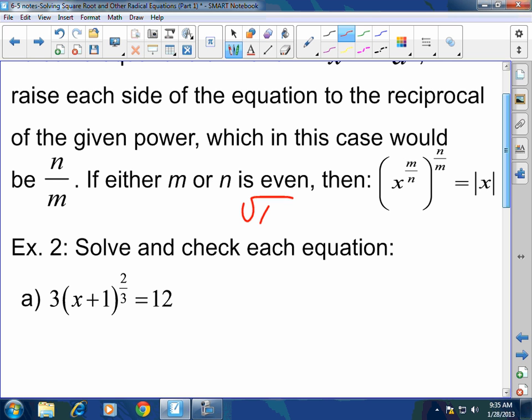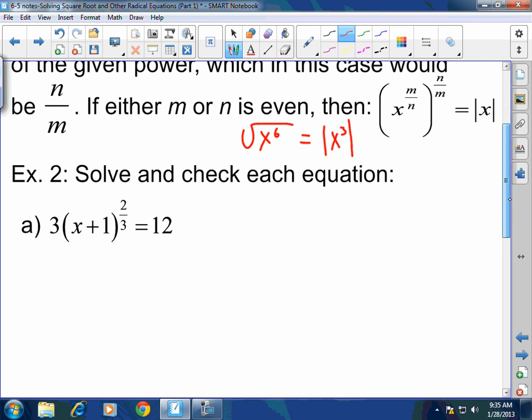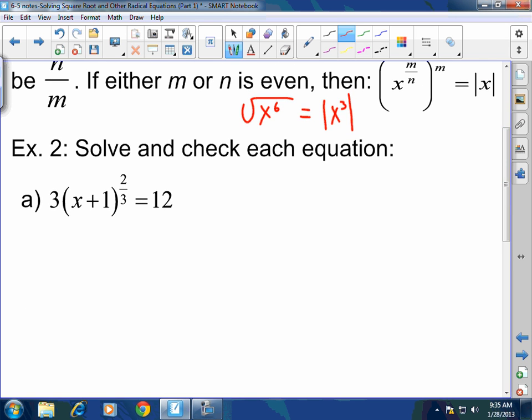For example, the square root of x to the 6 technically is really absolute value of x cubed. Because I took an odd exponent out of an even index. When I take an odd exponent out of an even index, I have to put an absolute value. So here, if either the numerator or the denominator of the original base is even, then I'm going to have to take it out as an absolute value of x. So let's go ahead and put that all to work.